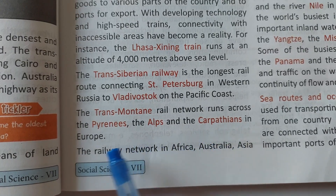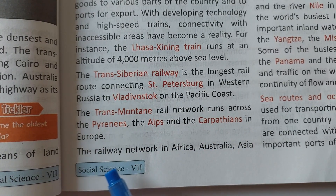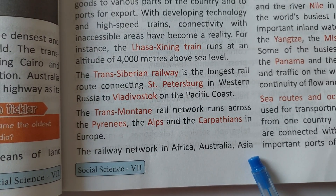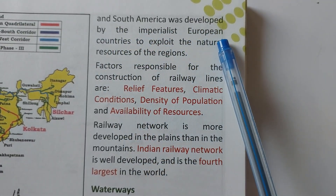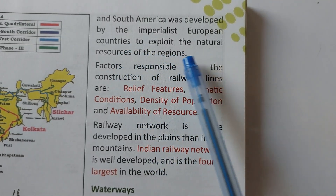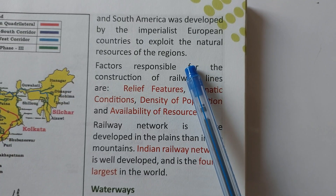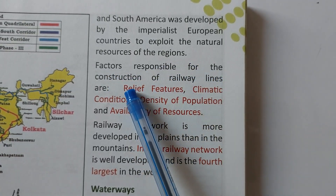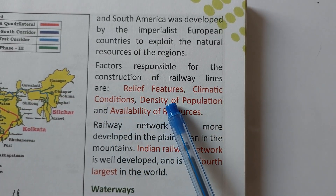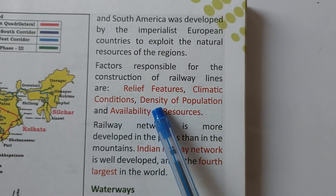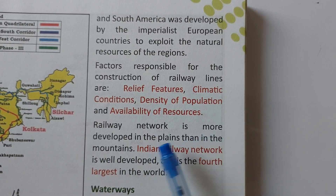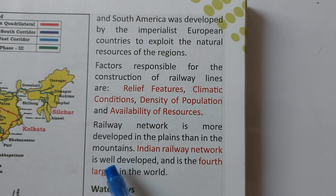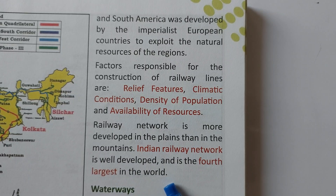The Trans-Mountain Rail network runs across the Pyrenees, the Alps, and the Carpathians in Europe. The railway network in Africa, Australia, Asia, and South America was developed by imperialist European countries to exploit the natural resources of those regions. Factors responsible for the construction of railway lines are relief features, climatic conditions, density of population, and availability of resources. Railway network is more developed in the plains than in the mountains. Indian Railway network is well developed and is the fourth largest in the world.